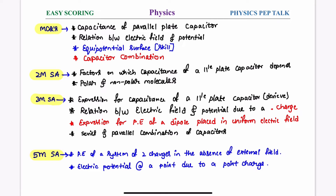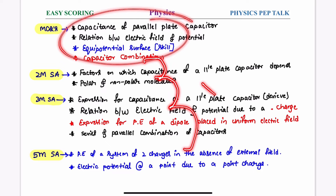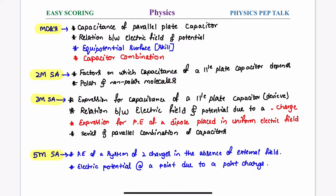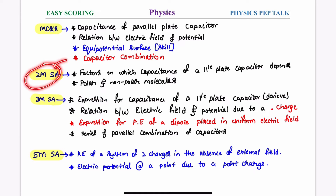There are many different questions. The capacitance of a parallel-plated capacitor and the different factors on which it depends can be asked for 2 marks or 3 marks. The 2-mark and 3-mark answers are essentially the same content, just the marks differ.